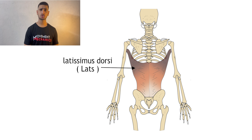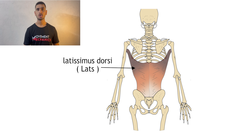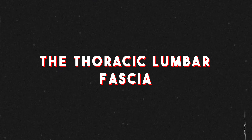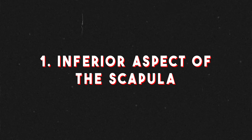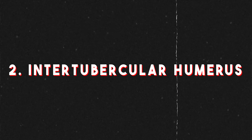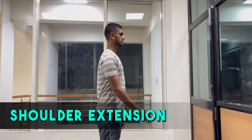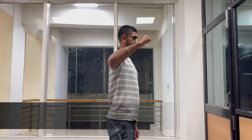Moving on from the pectoralis muscles, we are going to talk about the widest muscle of the back: the latissimus dorsi, or the so-called lats. The lats is a very wide muscle and hence it originates from multiple places — the spinous process of T7 to T11, the thoracolumbar fascia, the iliac crest of the pelvis, and ribs 9 to 12. The insertion of this muscle has two points: the inferior aspect of the scapula and the intertubercular groove of the humerus.